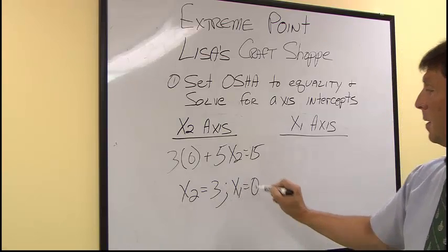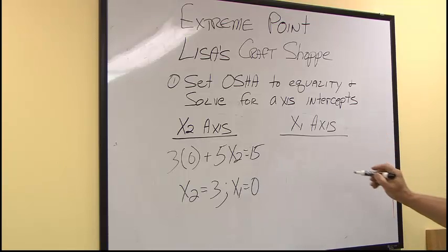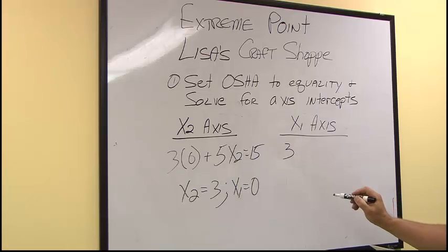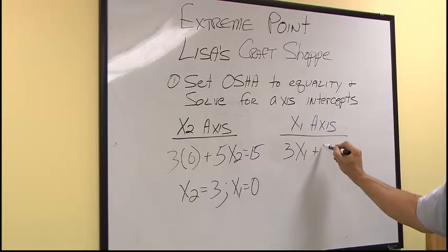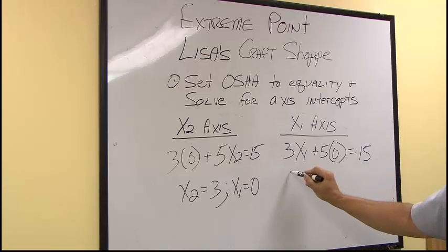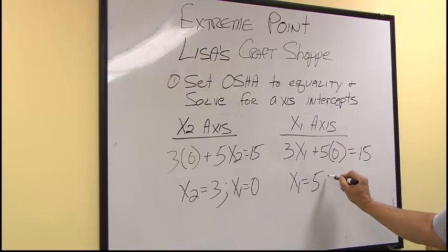We do the same for the x1-axis intercept. By setting x2 equal to zero, we can find x1. x1 equals five, and x2 equals zero.